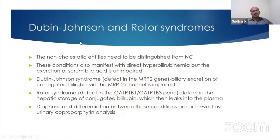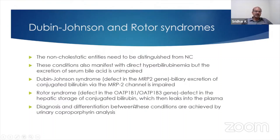We have to differentiate cholestasis from bilirubin excretion disorders — the non-cholestatic entities. So we have Dubin-Johnson syndrome, where the excretion of conjugated bilirubin is impaired, and Rotor syndrome, where the storage of conjugated bilirubin is impaired and the bilirubin leaks into the blood.